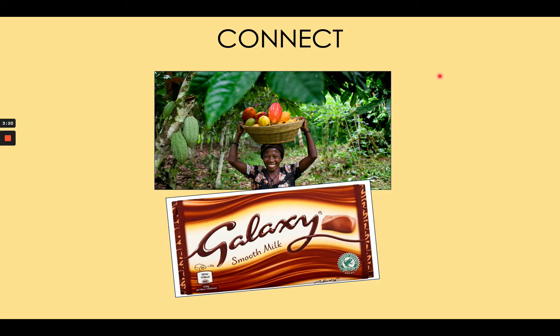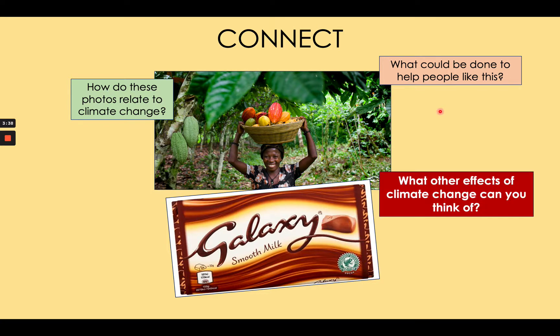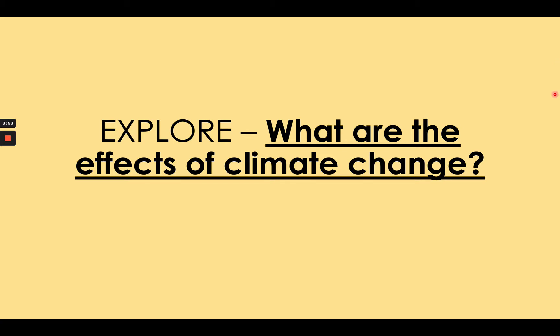In this lesson, you're going to understand the answers to two important questions. Number one: what human effects is climate change having? And number two: what environmental effects is climate change having? I'm going to show you three types of effect to help you understand the full spectrum of what climate change is doing to people and the environment around the world.